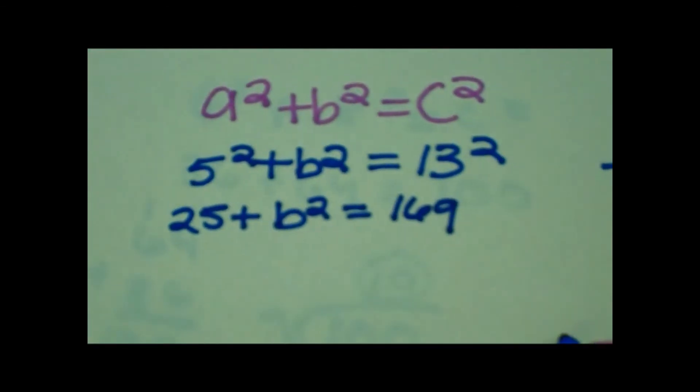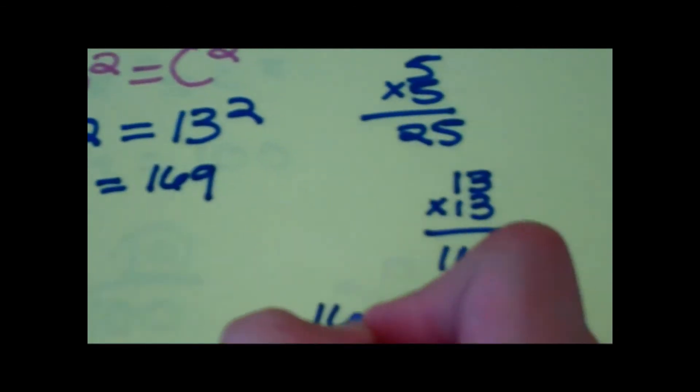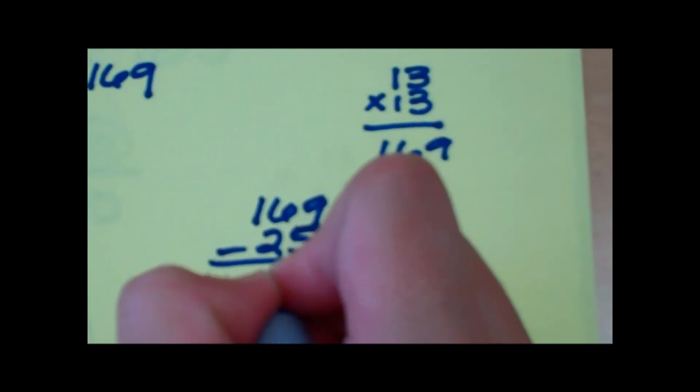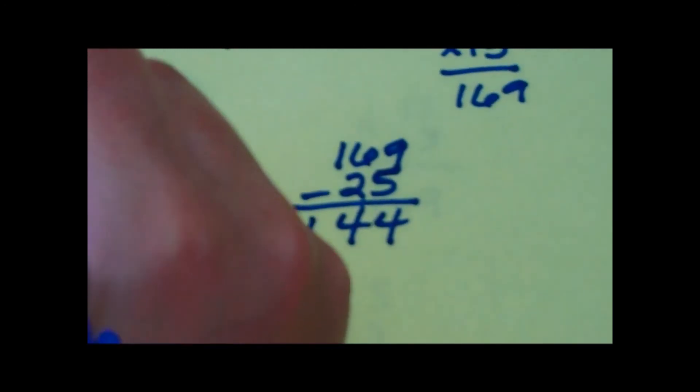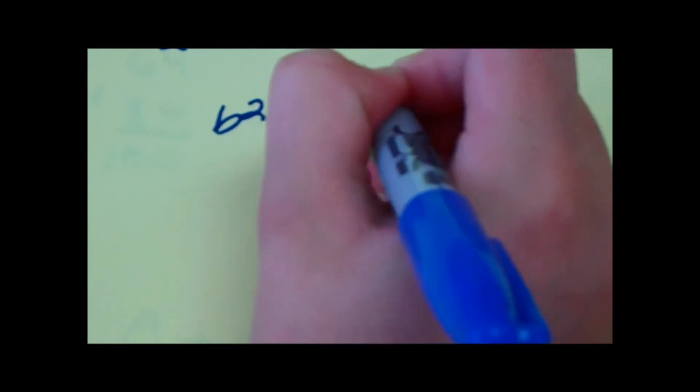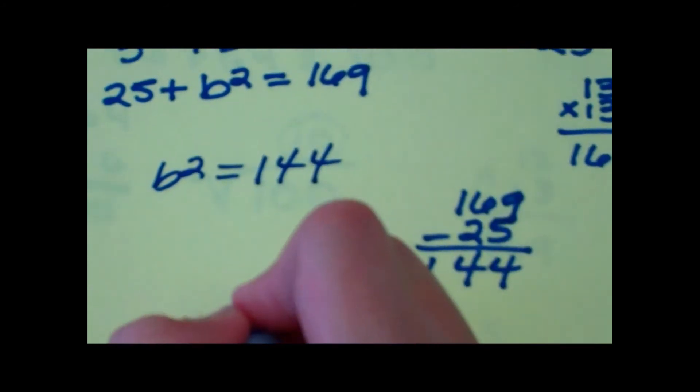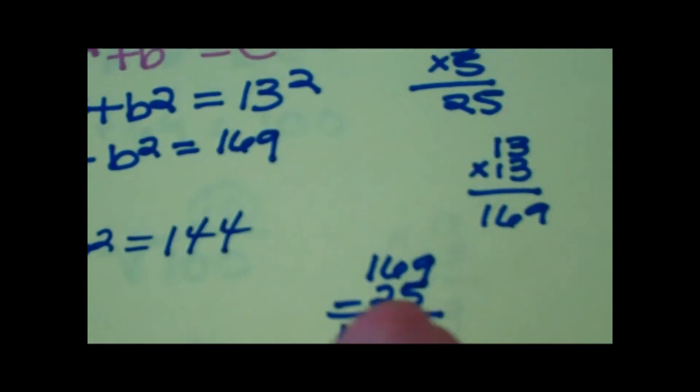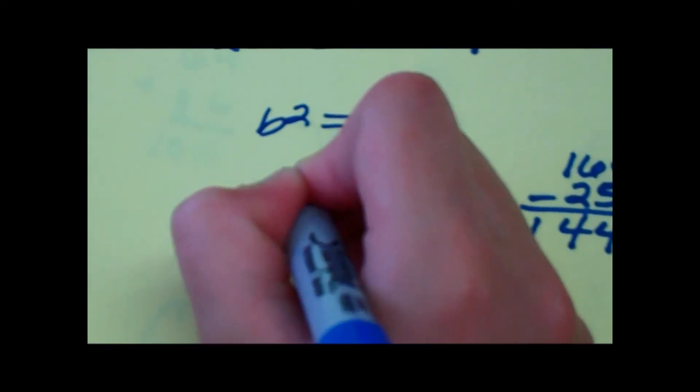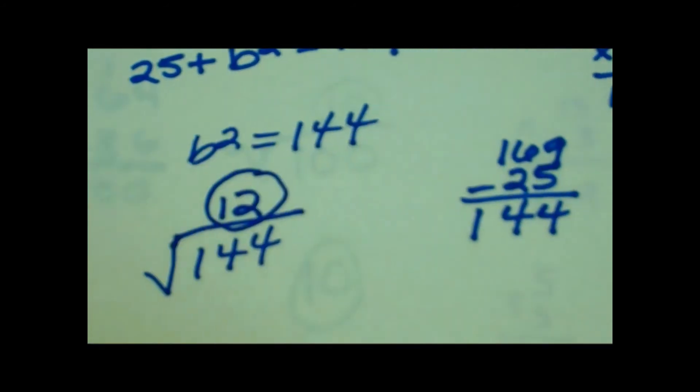So now we're going to subtract 169 minus 25. You get 144. B squared is going to equal 144. Now we need to find the square root. The square root of 144 is 12, and that is B.